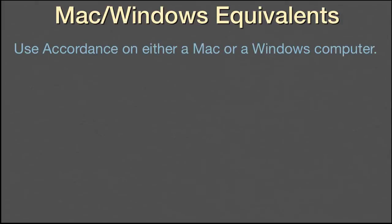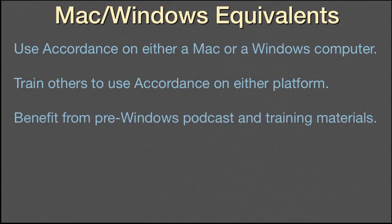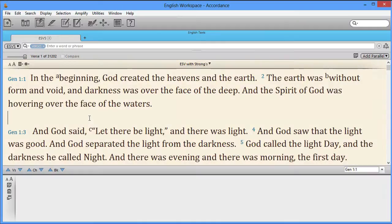Doing so has four advantages. First, users will be able to use Accordance on either a Mac or a Windows computer. Second, they will be able to train or assist others to use Accordance on either platform. Third, Windows users will be able to benefit from pre-Windows podcast and training materials. And fourth, those used to using Accordance on a PC under a Mac emulator will be able to transition smoothly to the native Windows version.